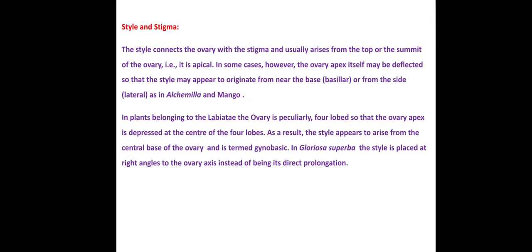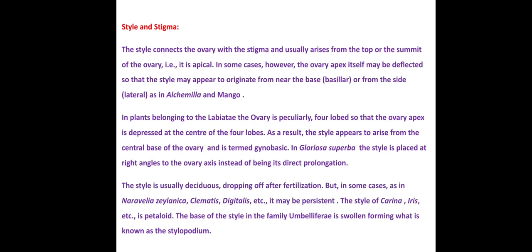In Gloriosa superba, the curl lily, the style is placed at right angles to the ovary axis instead of being its direct prolongation. So in Gloriosa superba the style is not a direct elongation of the ovary but is situated at a right angle to the wall of the ovary. The style is usually deciduous, dropping off after fertilization.